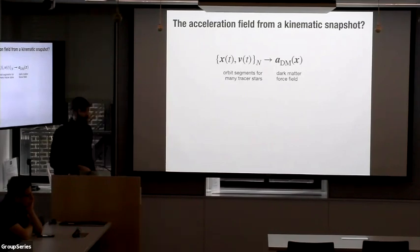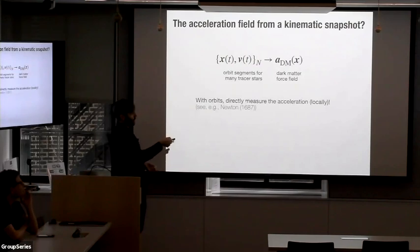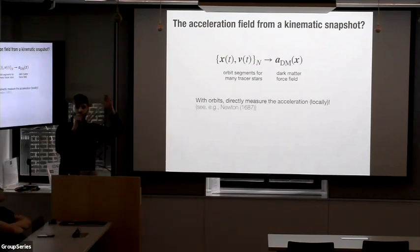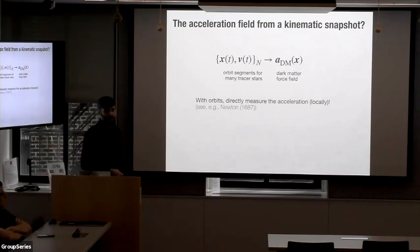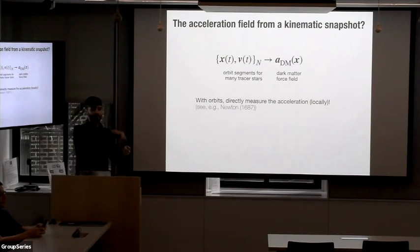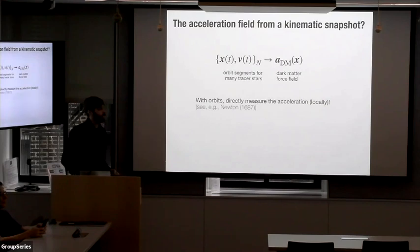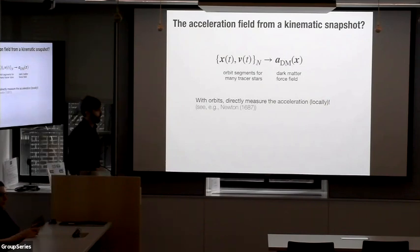The problem would be a lot easier if instead of instantaneous phase-space positions, we had actual full orbits for stars or even segments of orbits. Because if we had orbit segments, we could directly measure the acceleration — if you have an orbital trajectory, you know the acceleration local to that orbit. That's how Newton determined that the force law of the solar system falls off like one over r squared: he saw that the orbits of the planets are closed ellipses. It would be a lot harder if you just had the positions and velocities for all the planets at one instant in time.